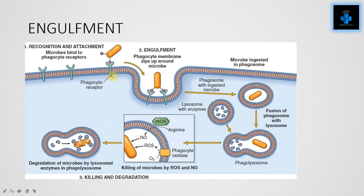Next is engulfment. It takes place by extending the plasma membrane along with cytoplasm around the microbe, forming a pseudopod. The pseudopod then pinches off to form a vesicle known as the phagosome. The phagosome later fuses with the lysosome containing enzymes to form a phagolysosome, inside which the lysosome gets activated and lysis begins.